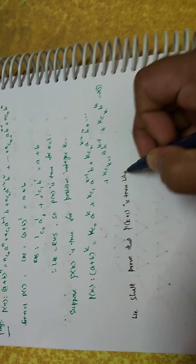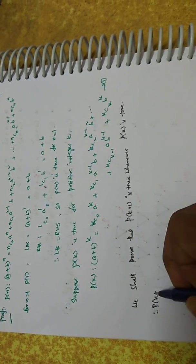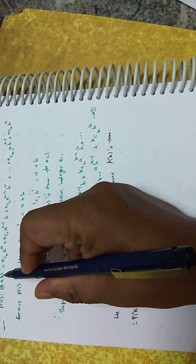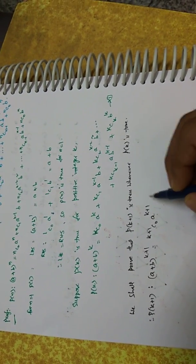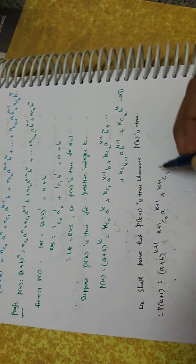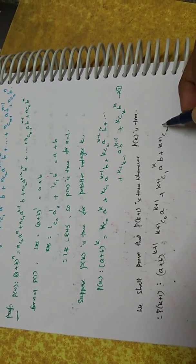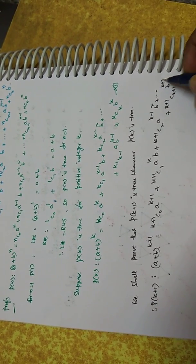We shall prove that P(k+1) is true whenever P(k) is true. P(k+1): (a + b)^(k+1) = (k+1)C0 * a^(k+1) + (k+1)C1 * a^k * b + (k+1)C2 * a^(k-1) * b^2 + ... + (k+1)C(k+1) * b^(k+1). Consider LHS.